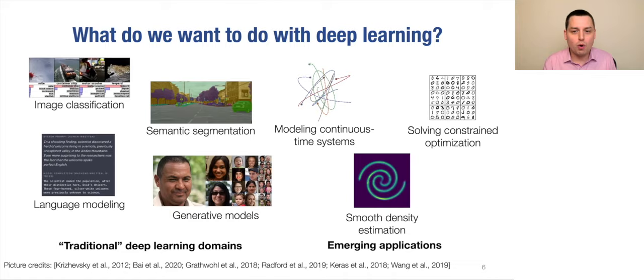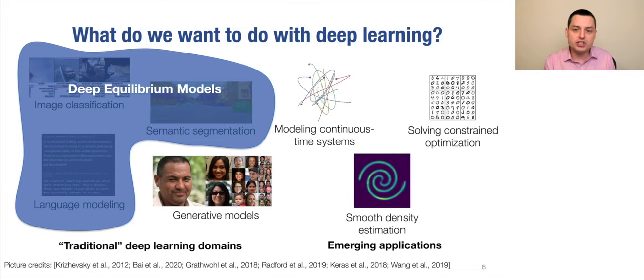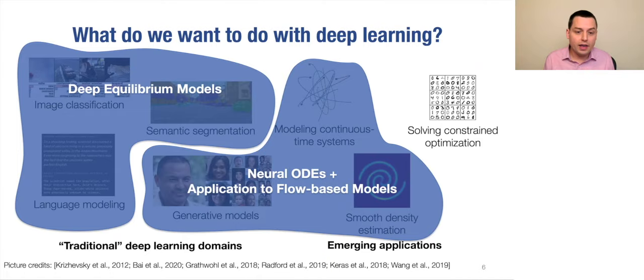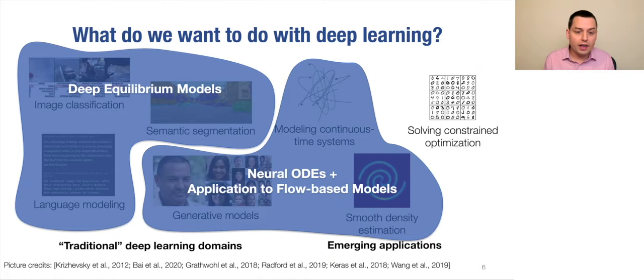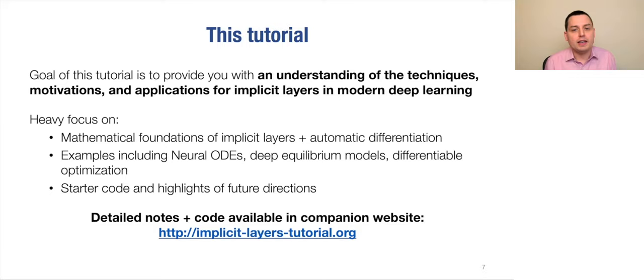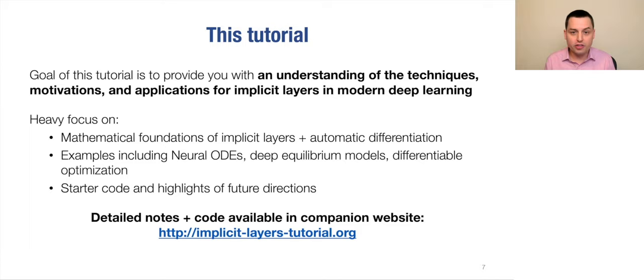Coming back to what we want to do with deep learning, we can basically do all these things with implicit layers. Classic machine learning tasks can be accomplished using deep equilibrium models. Things like flexible generative models, smooth density estimation, and continuous time modeling fit well into neural ODEs and flow-based models. And solving constrained optimization fits well into the framework of differentiable optimization. In this tutorial, the goal is to provide understanding of the techniques, motivations, and applications for implicit layers, with a heavy focus on mathematical foundations and automatic differentiation, including some code.